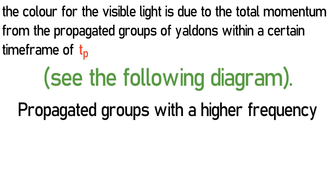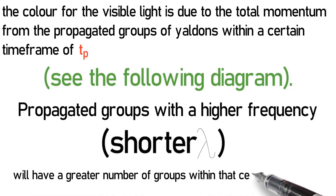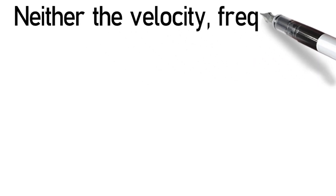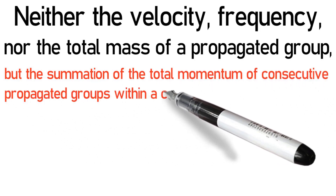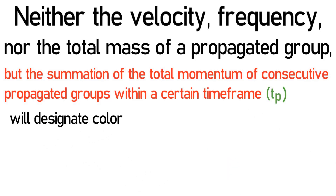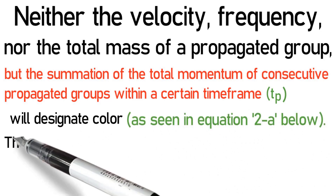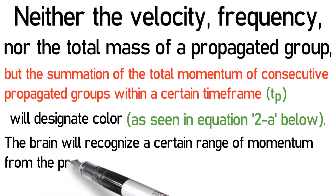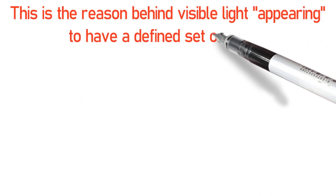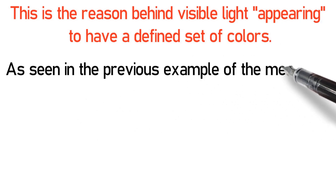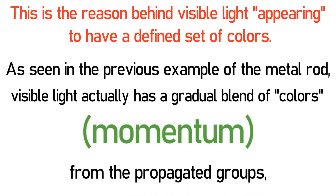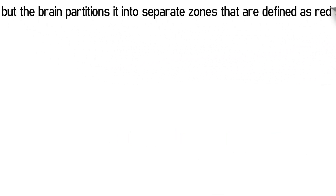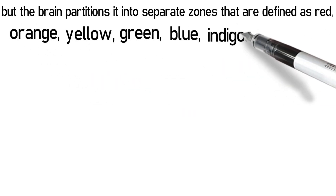Propagated groups with a higher frequency will have a greater number of groups within a certain time frame. Neither the velocity, frequency, nor the total mass of a propagated group alone, but the summation of the total momentum of consecutive propagated groups within a certain time frame will designate color, as seen in equation 2a. The brain will recognize a certain range of momentum from the propagated groups for each color as it strikes the eye nerves. This is the reason behind visible light appearing to have a defined set of colors: red, orange, yellow, green, blue, indigo, and violet.